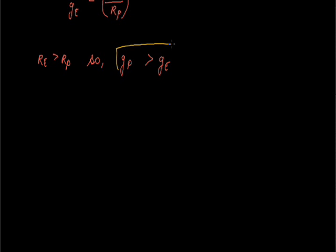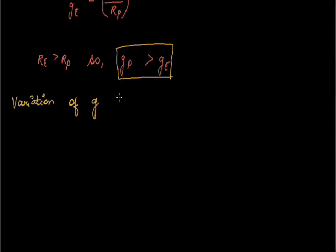We find that gravity is greater at poles than at the equator. The value of g is maximum at poles and minimum at the equator. The next topic is variation of g due to rotation of Earth.